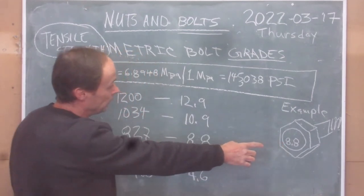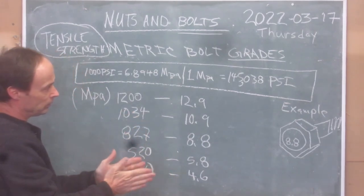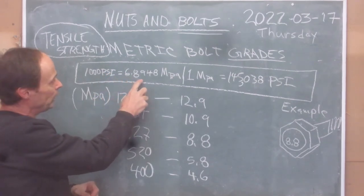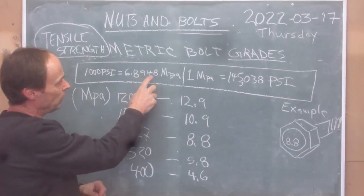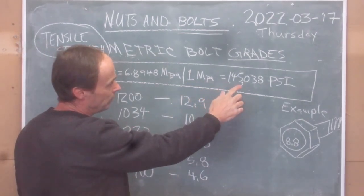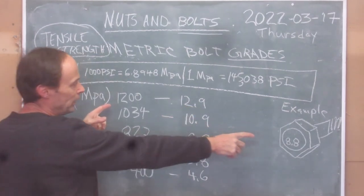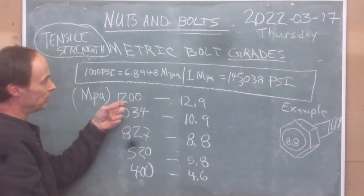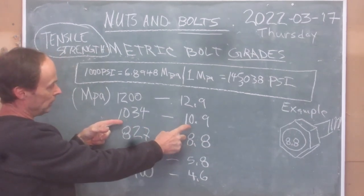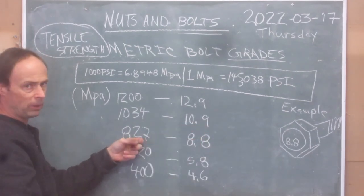Metric bolt grades are marked on the head — for example, 8.8. Tensile strength: 1,000 PSI equals 6.894 megapascals, and 1 megapascal equals 145 PSI. A 12.9 grade bolt has 1,200 megapascals tensile strength — very strong. A 10.9 is 1,034 megapascals, and an 8.8 is 827 megapascals.